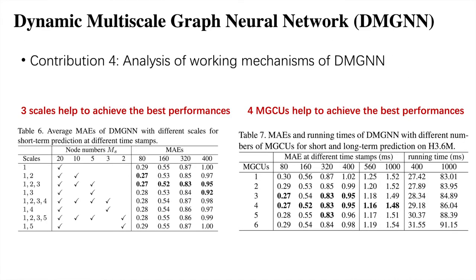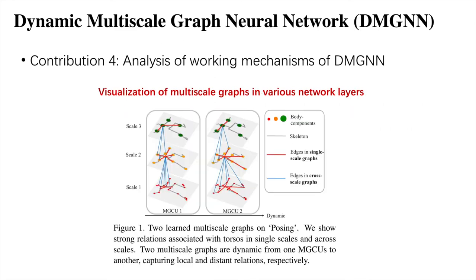Based on the ablation studies, we show that when we use three fine-to-coarse scales, we tend to obtain the best performance, since three scales effectively provide both abstract and detailed information, but too many scales over-complicate the graph, which hurts fine-grained motion prediction. We also find that four MGCUs help to achieve the best results. We visualize the learned dynamic multiscale graphs and see that the multiscale graphs are dynamic across various network layers, carrying different structures and information. The cross-scale graphs also reveal the functional group connections from finer scales to coarser scales.